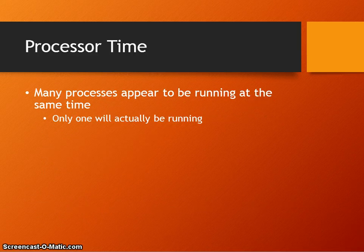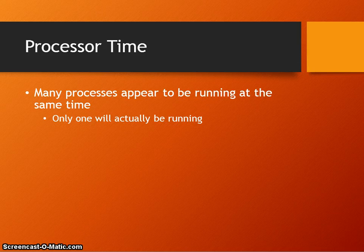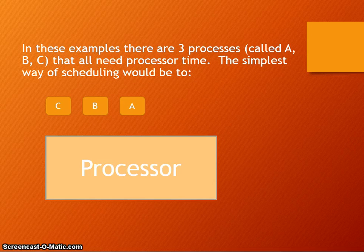In terms of processors, processor time is managed. With a single core processor, many processes appear to be running at the same time — you could have many windows and programs open at once. But with a single core, only one program will actually be running at a time. So how does it appear to the user as if it is multitasking? Two ideas are time slicing and scheduling.